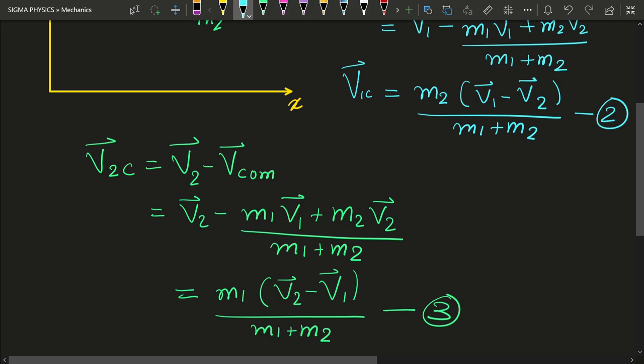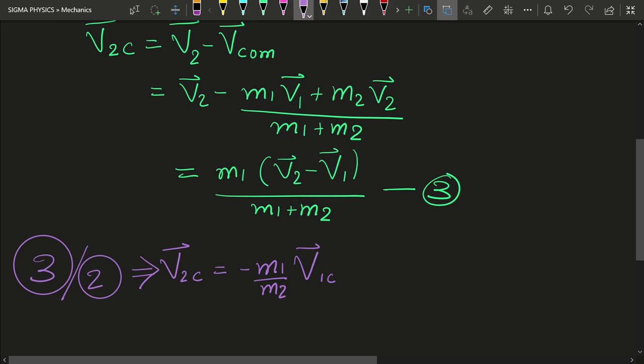Next, what we can do is divide equation number three by equation number two and then find a relationship between v2c and v1c. If we divide equation three by equation two, we get that the velocity of m2 with respect to center of mass is minus m1 upon m2 times the velocity of m1 with respect to center of mass.